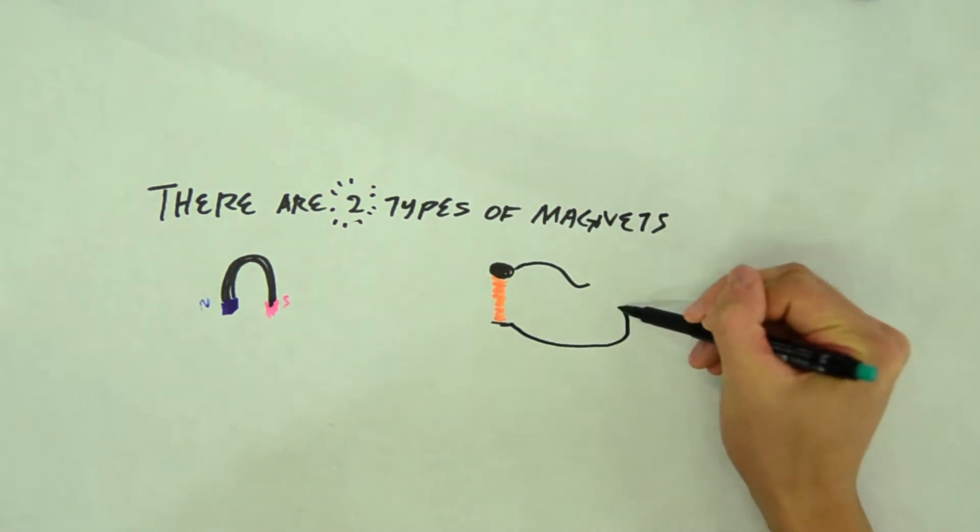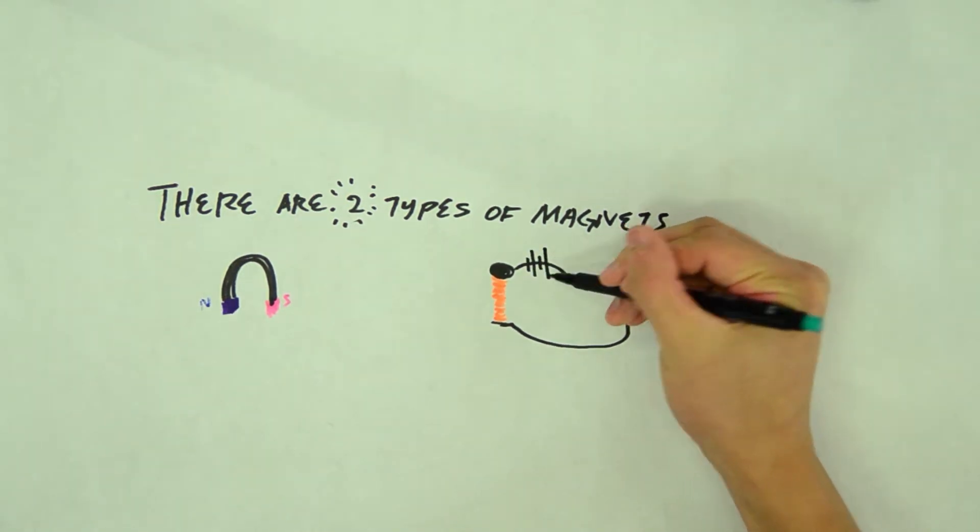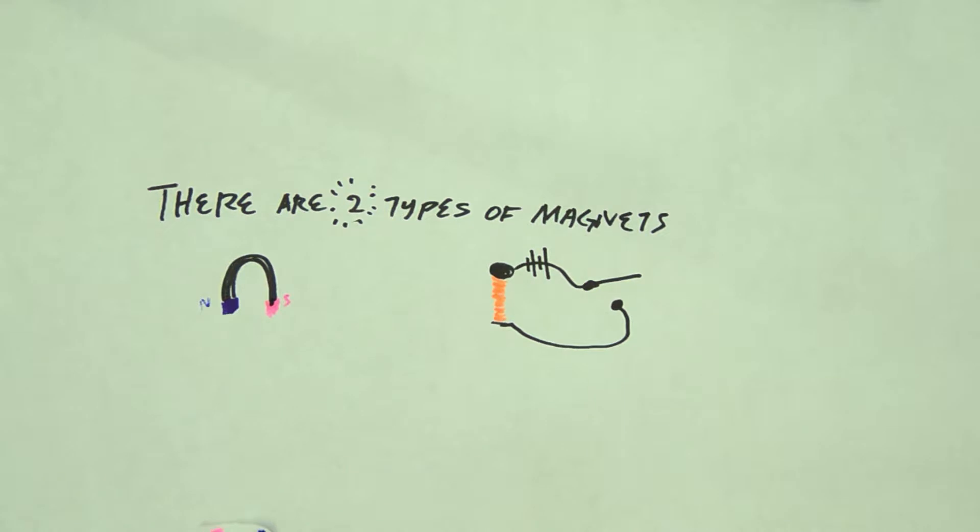When another magnet is placed near the natural magnet, its unlike poles attract each other. This means that north attracts south, and south attracts north.